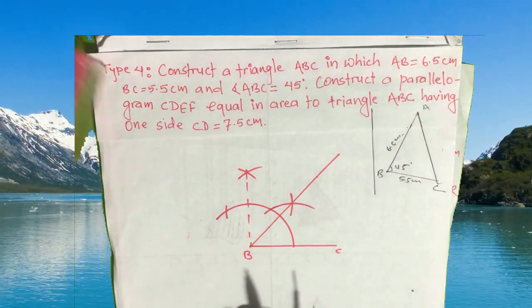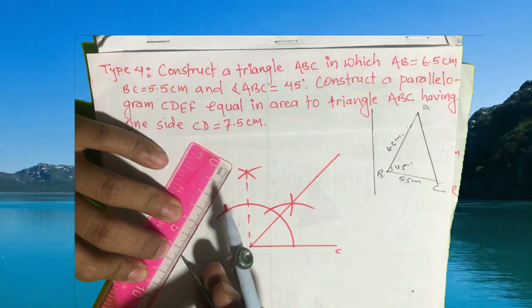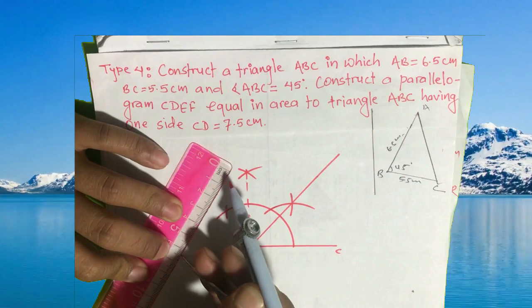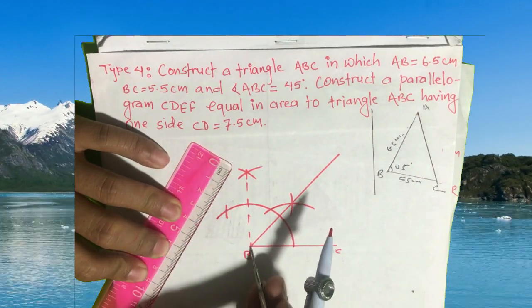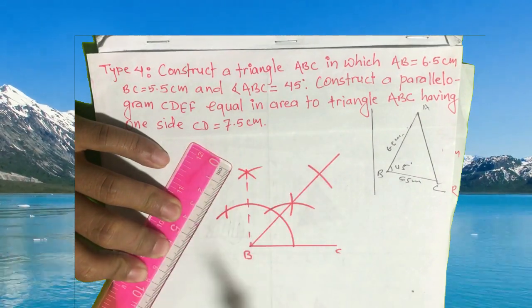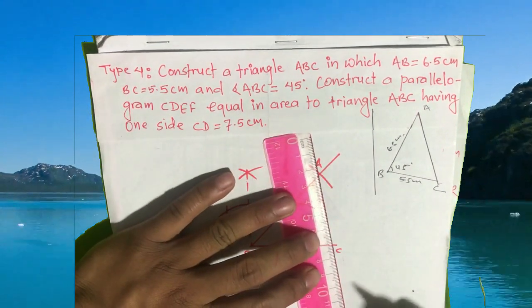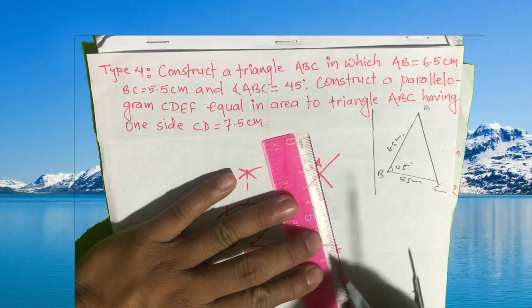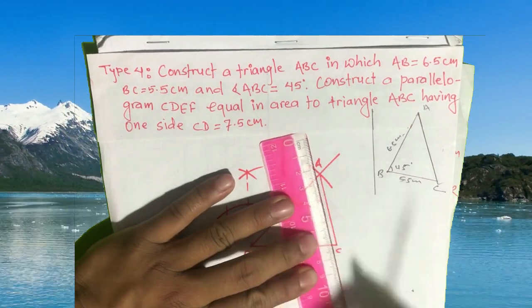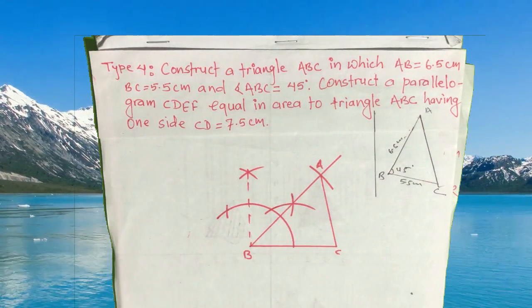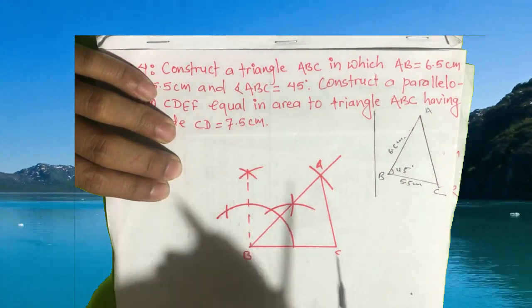Point A is 6.5 centimeters from B. Make an arc of 6.5 centimeters and cut from here. This is point A. Join A to C. This is your triangle ABC.